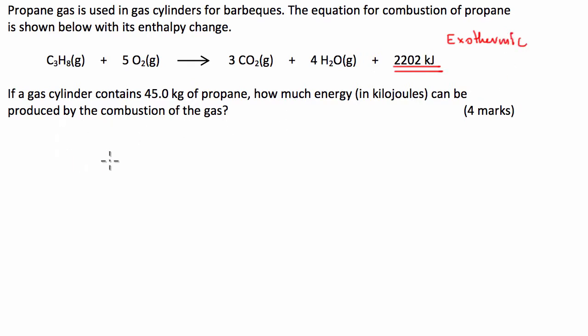So if a gas cylinder contains 45 kilos of propane, how much energy in kilojoules can be produced by the combustion of the gas? We're assuming complete combustion. It's worth 4 marks, so it's not really too complicated. Let's get straight to it.